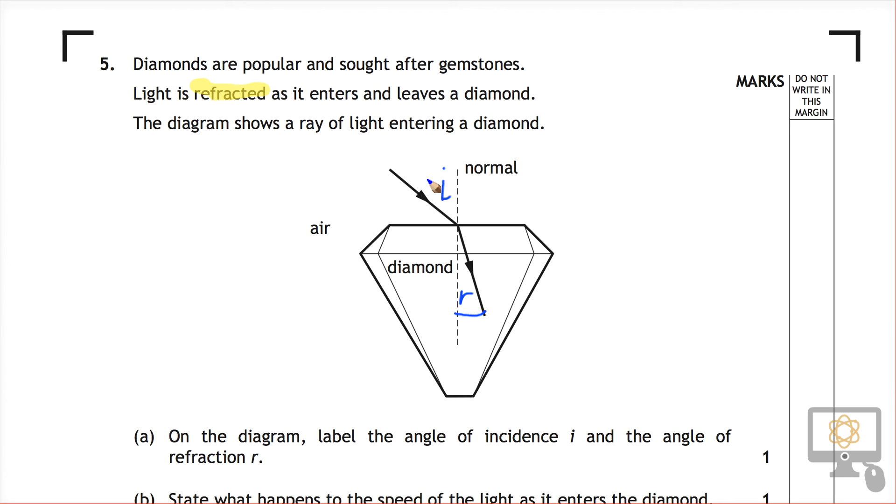If you want to be even clearer, you can label them like that, I suppose. You don't need to do that, but those are the two angles.